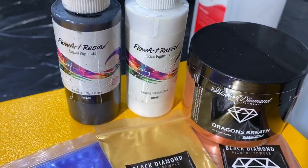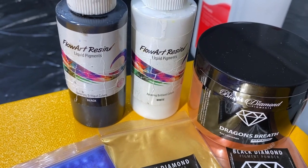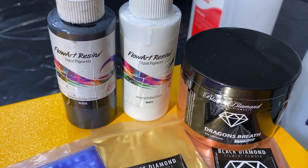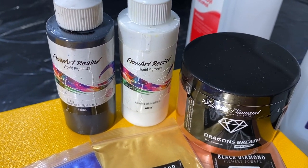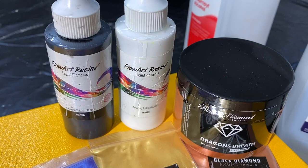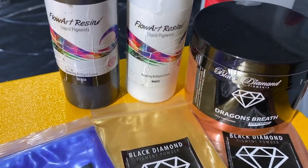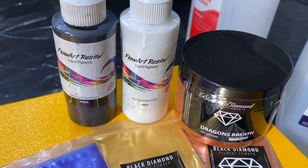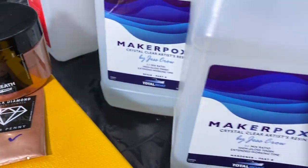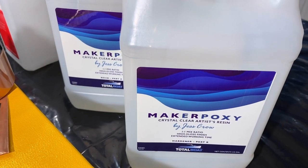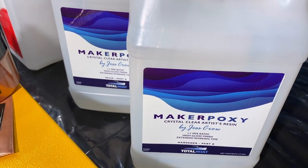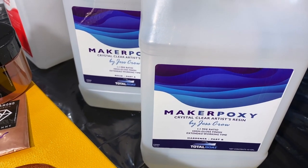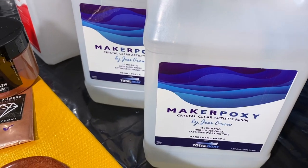I have my handy-dandy Flow Art Resin from the Epoxy Resin Store. Their liquid pigments are very intensely colored. They're a liquid paste, so they combine very easily into resin. One of my favorites. The white is excellent for getting some lacing. We'll also be using Total Boat's Maker Poxy. This one has a really long open time to work with, so let's get started.